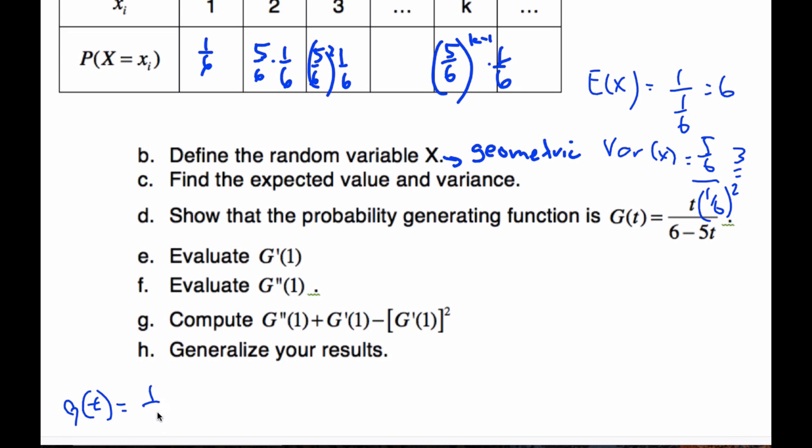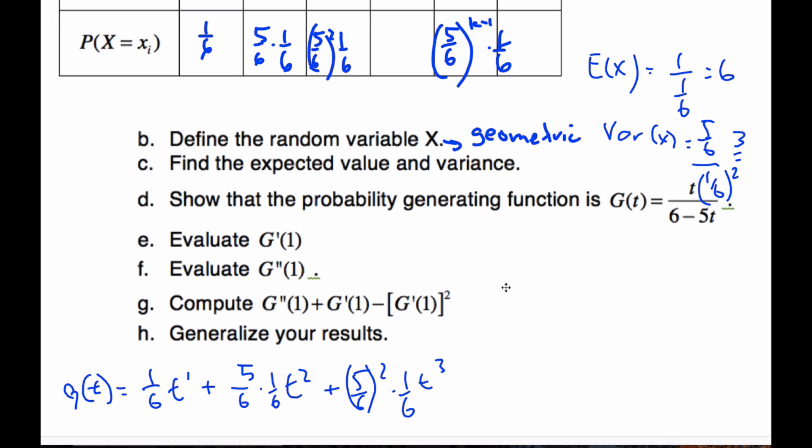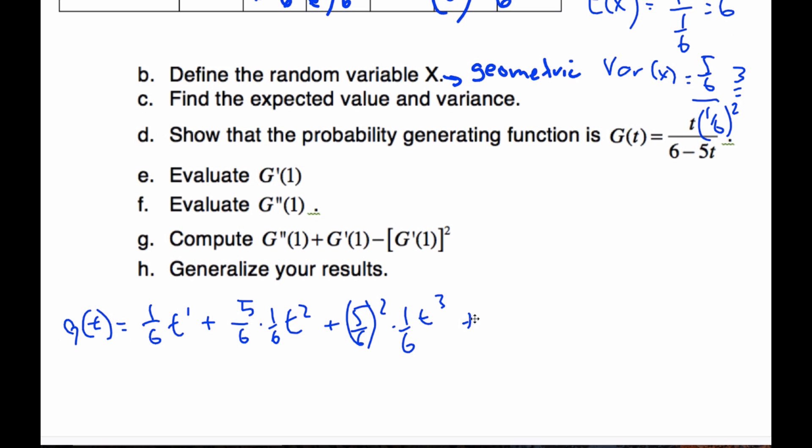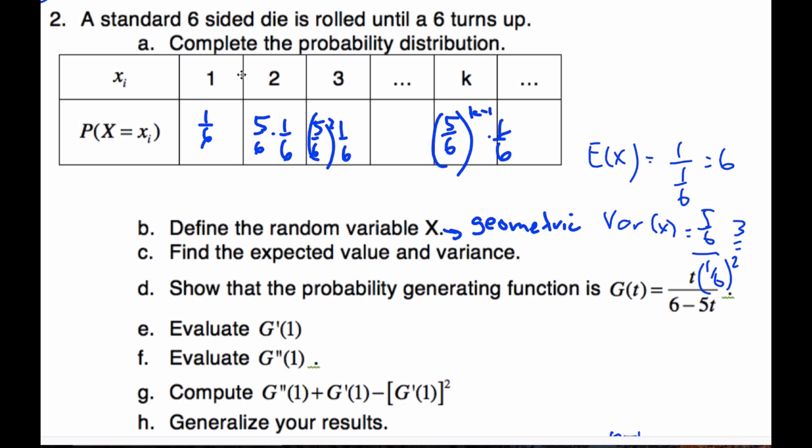So it's going to be one-sixth times T to the one plus five-sixths times one-sixth T squared plus five-sixths squared times one-sixth T cubed, and I'm going to do that all the way up to the Kth term or the Nth term. That's going to be five-sixths to the N minus one times one-sixth, and that is going to be T to the power of N. This is my generating function for this particular distribution.